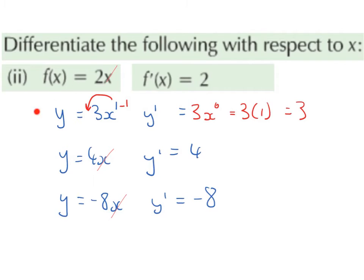But it is important to understand the reason why this happens. Any variable on its own is really to the power of 1. So 3x is really 3x to the power of 1. We bring down the power in front, so it's going to be 1 multiplied by 3, which is 3. And we reduce the power by 1. 1 take away 1 will be 0. x to the power of 0 gives me 1. Anything to the power of 0 is 1. And since the 3 and the x to the power of 0 are stuck together, it means 3 multiplied by 1, and 3 multiplied by 1 is 3.